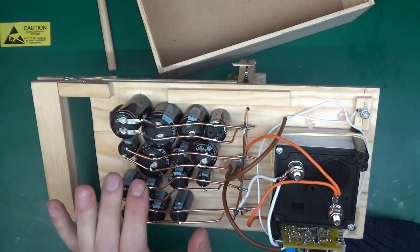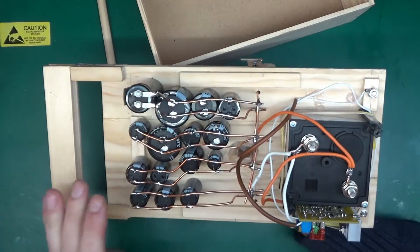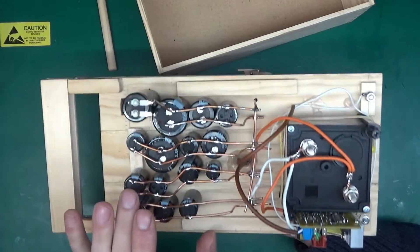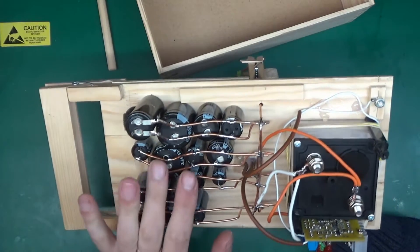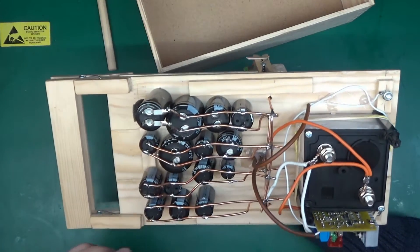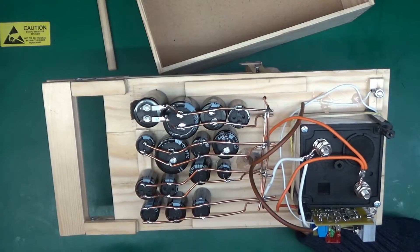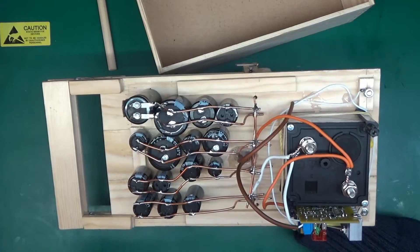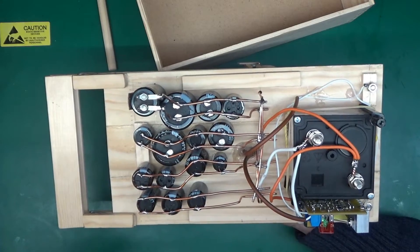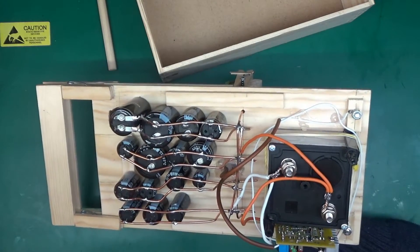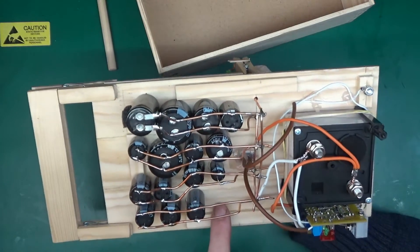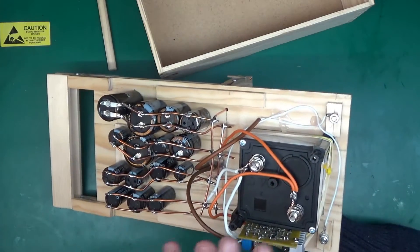The capacitors are all in parallel and they're all salvaged old mains filter caps. At the moment the total capacity of this is 1461 microfarads, so 1.4 millifarads, quite a bit actually. I've got space to add maybe a few more when I dig them out from something.